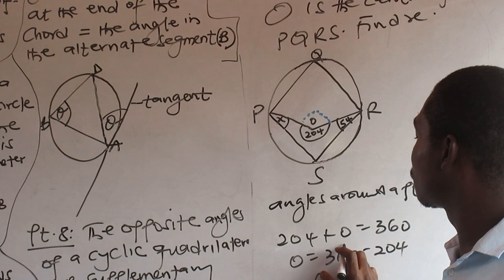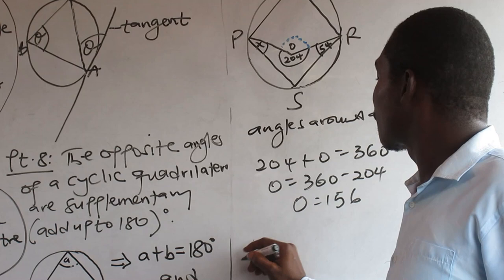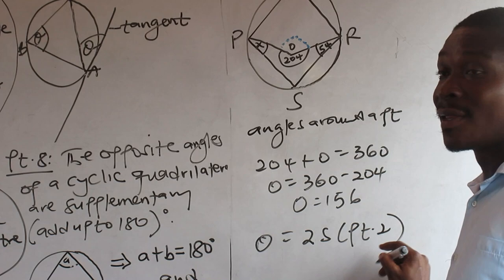156. 156. Now, do you know that O equals two times the angle at S? Do you believe? That's property 2, right?